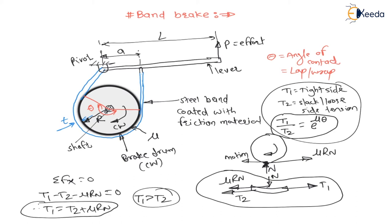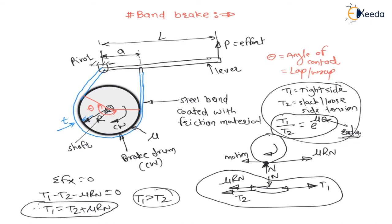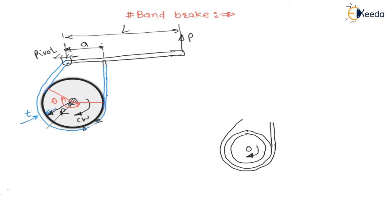Now for this arrangement, let me draw the free body diagram. Here is the brake drum of radius R with the steel band wound on it, rotating in clockwise direction. On the right side there is tight side tension T1, and on the left side there is loose side tension T2. The radius of the brake drum is R and the thickness of the steel band is t.